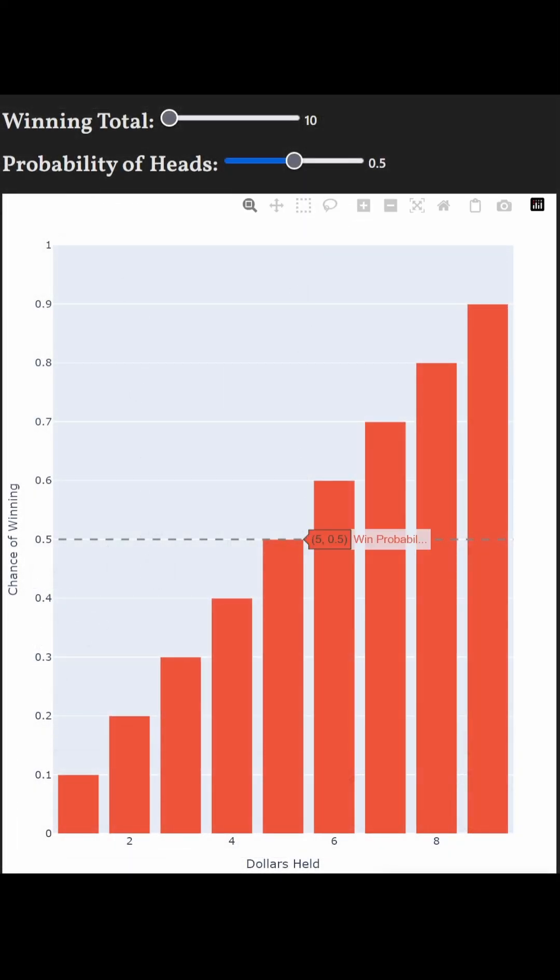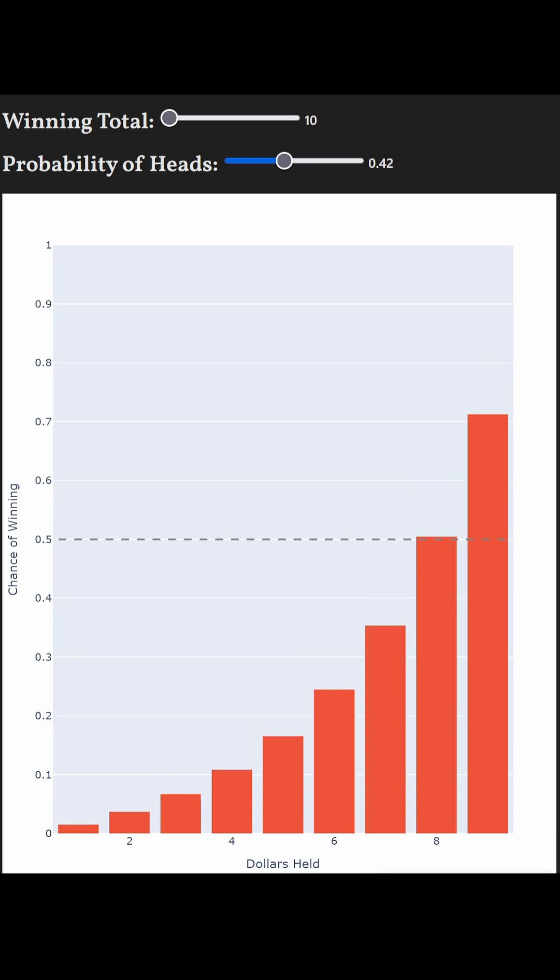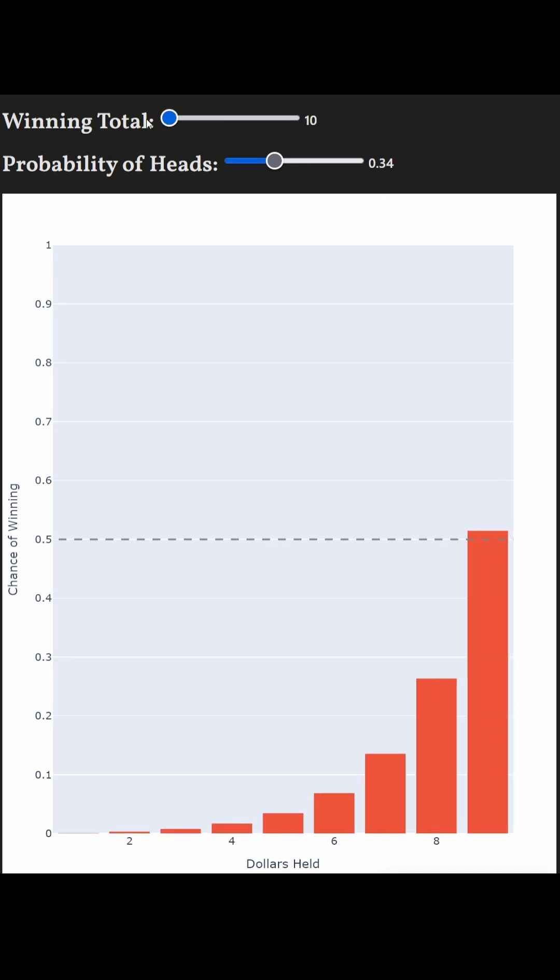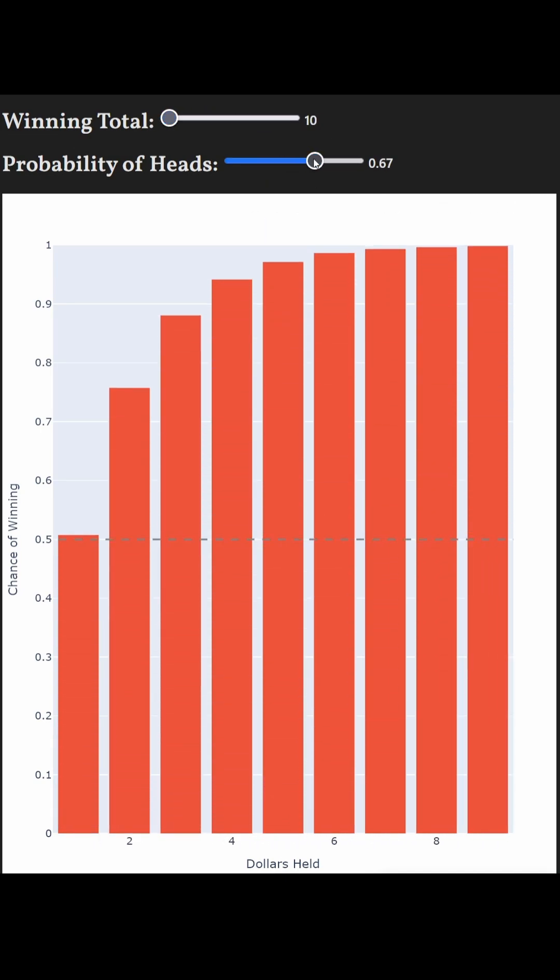The solution reveals that with a fair coin the chance of winning changes linearly with the starting value. If the coin is biased against us with a one-third chance or less of landing on heads, then we'd expect to lose even starting just one dollar shy of the goal. With a coin more than two-thirds biased in our favor, we'd expect to win even starting with just one dollar.